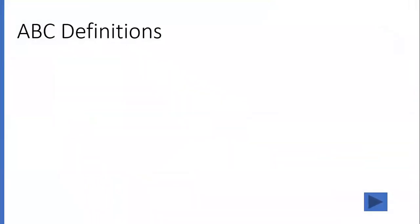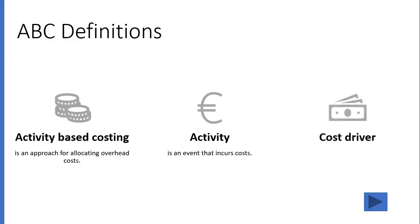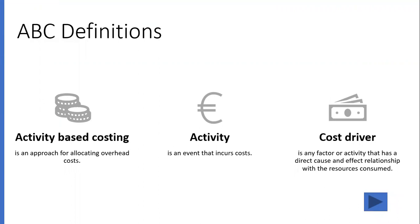ABC definitions: Activity-based costing is an approach for allocating factory overhead costs. An activity is an event that incurs cost. A cost driver is any factor or activity that has a direct cause-and-effect relationship when resources are consumed.